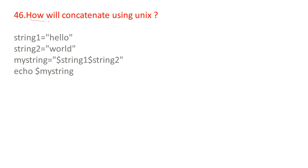How will you concatenate using index in Unix? First we store one word — 'hello' — to string1 and another word to string2. By using the dollar symbol, we can concatenate: mystring=$string1$string2. Then echo $mystring. Like this, we can print the concatenated string using echo.